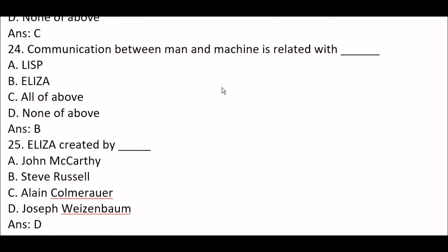Next question: communication between man and machine is related with — Option A: Lisp. Option B: ELIZA. Option C: all of the above. Option D: none of the above. The right answer is Option B — communication between man and machine is related with ELIZA.